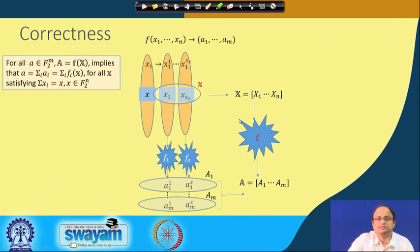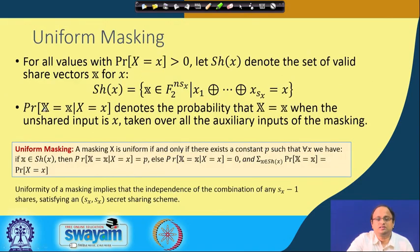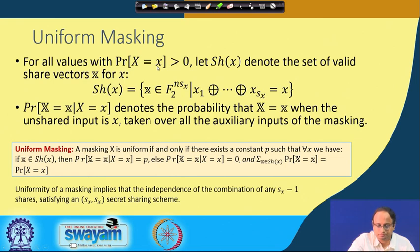As we defined in the last class, this is essentially the basic idea of threshold implementations: the input x has been broken up into shares, and the threshold circuit should give the corresponding output shares, so that if I combine them I should get a legitimate output corresponding to the actual data input x.